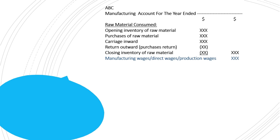The third direct cost is direct expenses, which are normally clearly defined in the question, or written as 'royalties.' Both are the same thing — royalties are considered direct expenses because without paying them the business cannot produce goods, so they are directly related to production and recorded as a direct cost. Remember, direct costs are normally variable costs and vary directly with output — if output increases, these costs increase; if output decreases, these costs decrease.